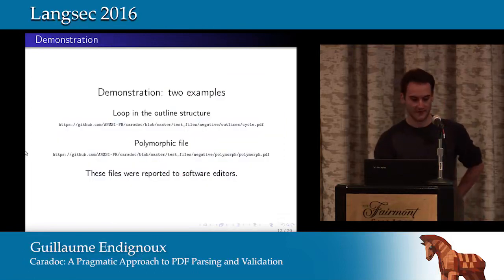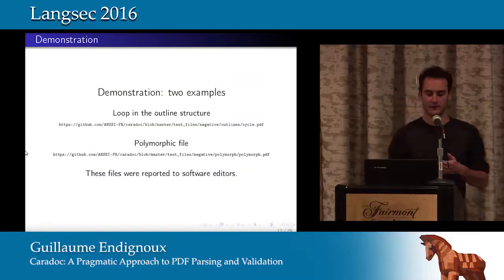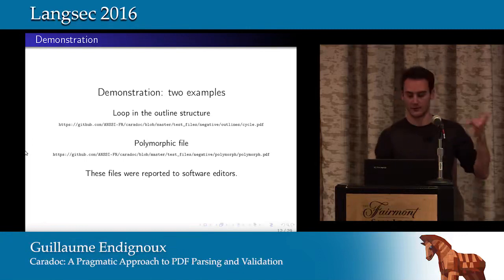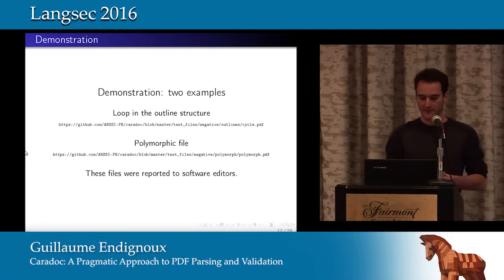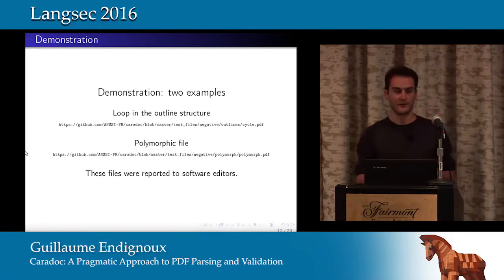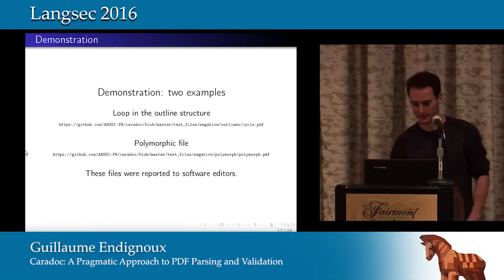I have a demonstration with two problematic PDF files. The first one has a loop in the outline structure. The second one is a polymorphic file — we will open it with several PDF readers and get different content. These files were already reported to software editors, so the demo uses previous versions of the software.